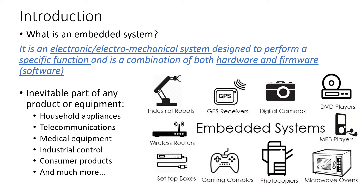Some key words here: electronic or electromechanical. These systems are not just oriented for computation, they are also coupled with mechanical aspects. The computation is coupled with mechanical aspects of a system. These are designed to perform a specific function — it's not general purpose computing, it is oriented for a specific purpose. And it's a combination of both hardware and software.